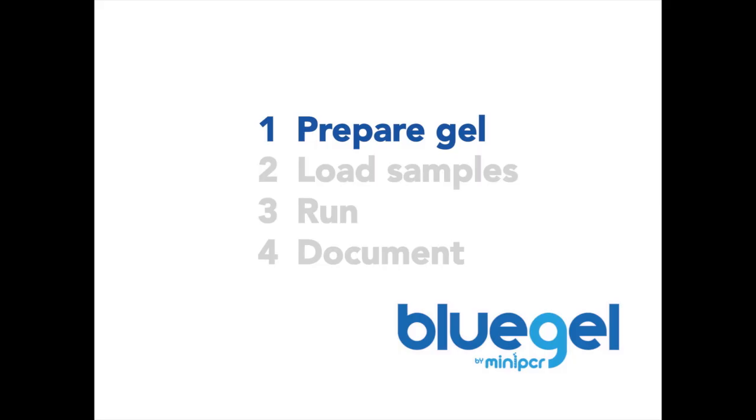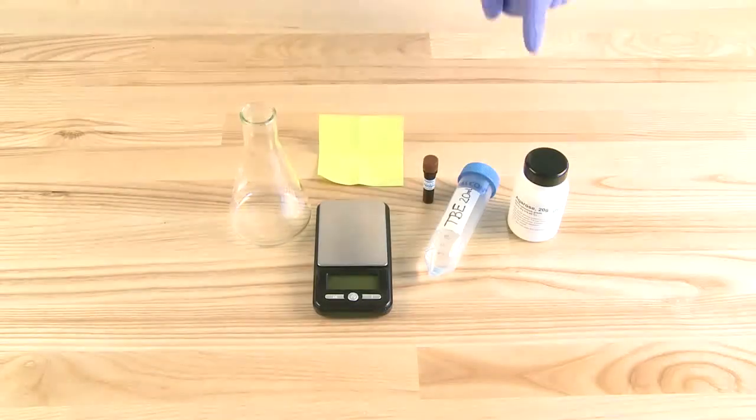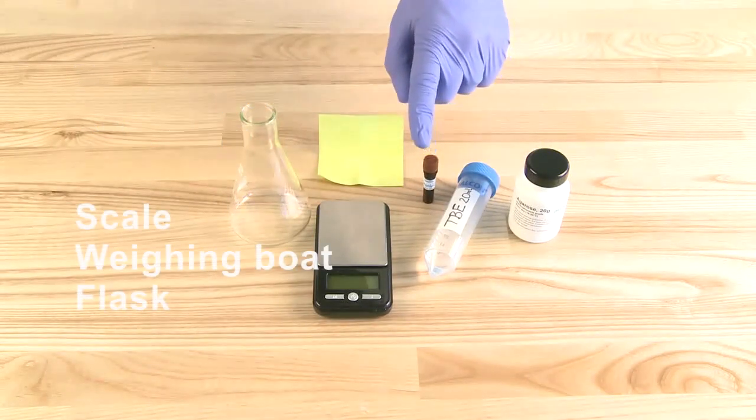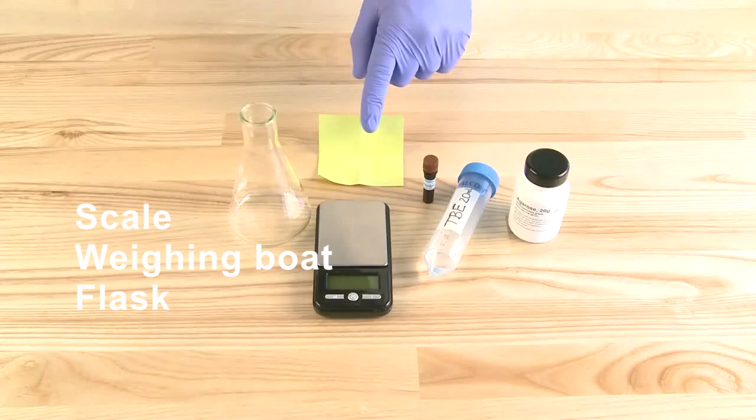Let's get started by preparing a gel. For this step, you will need agarose, running buffer, DNA stain, a scale, a weighing boat, and a flask.